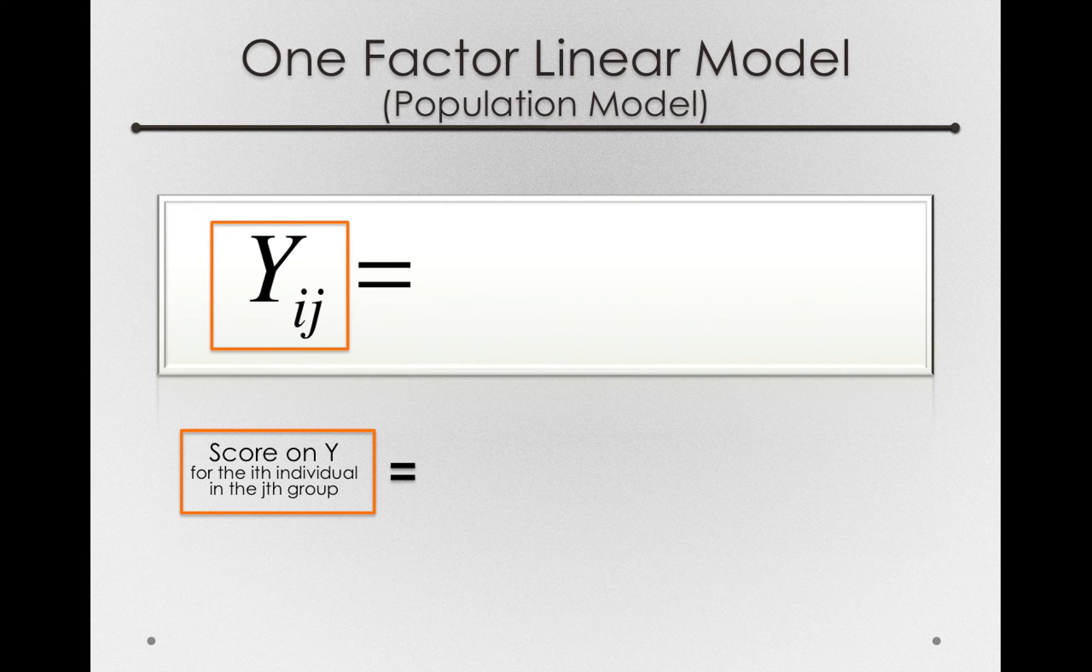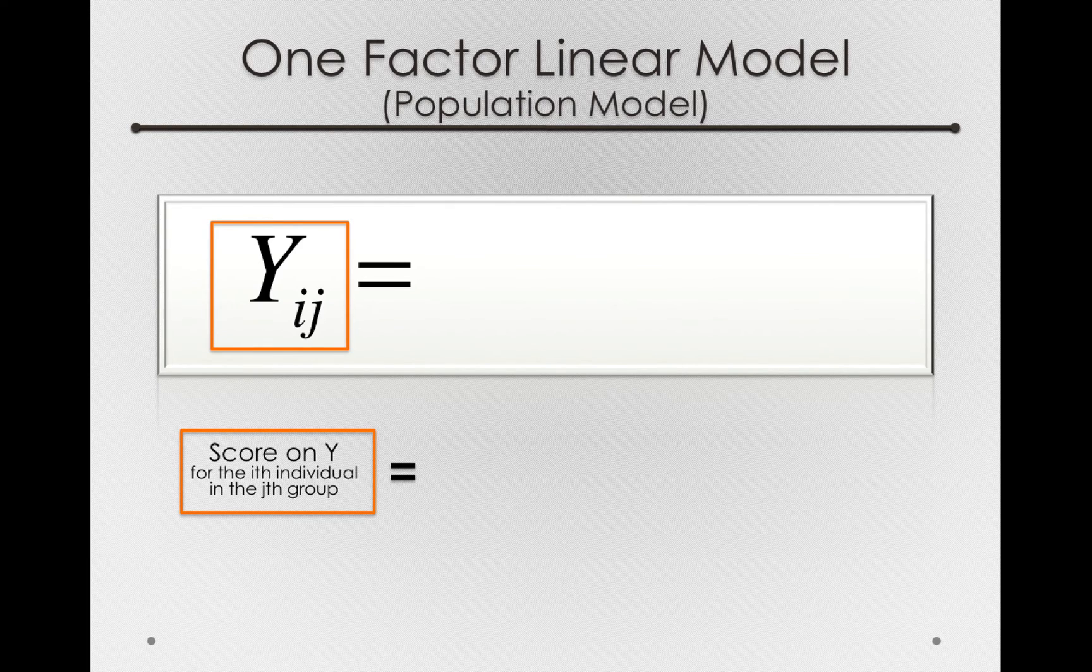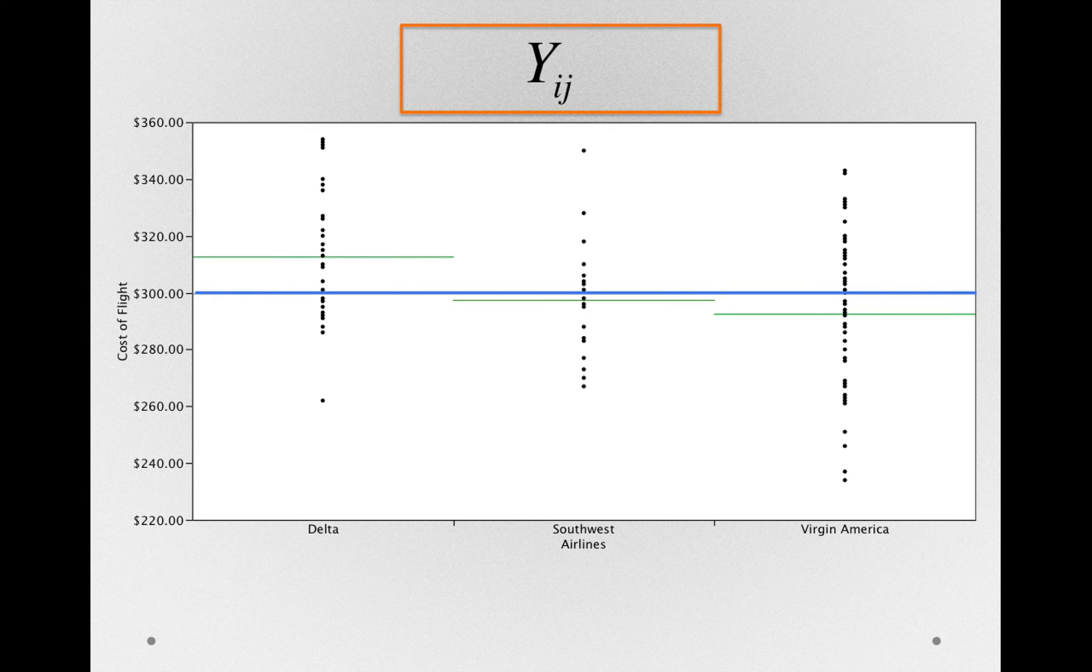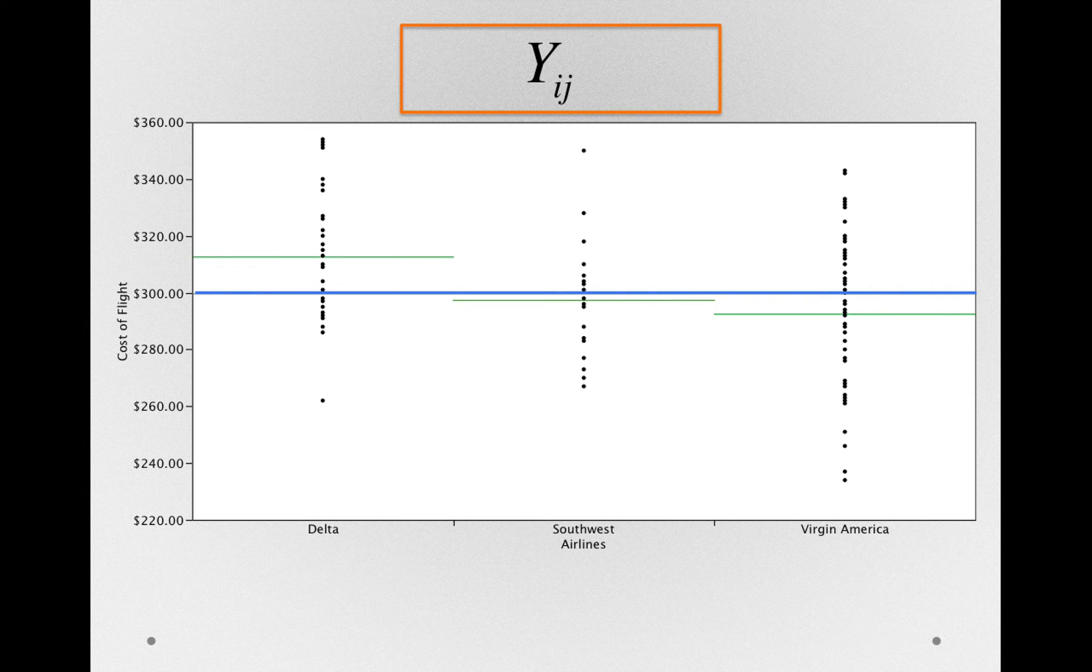So the way this reads is the score on Y for the ith individual in the jth group. Again, this is just bookkeeping. This is a way of keeping track of which individual. Let's go back to our plot. The Y_ij here is referring to the different individuals. And we can put a number in place of the i or in place of the j to represent particular individuals or groups of individuals.